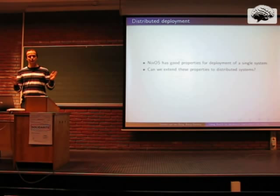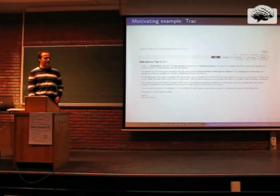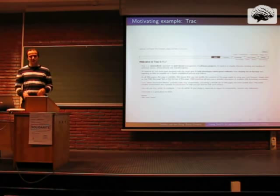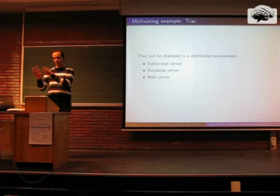As a motivating example I will use TRAC, a web-based management system for a software project. With TRAC you have access to your Subversion repository, you can define tickets, and so on. TRAC can be deployed in a distributed environment — you can have a separate Subversion server, a separate database server, and a separate web server connected to each other. You may want to deploy TRAC on three separate machines instead of a single machine.